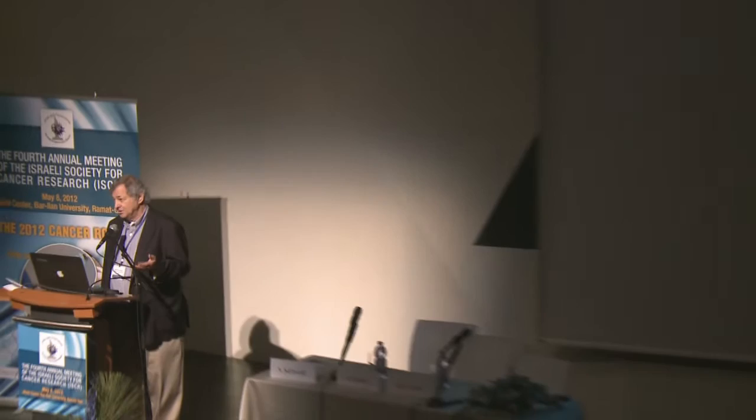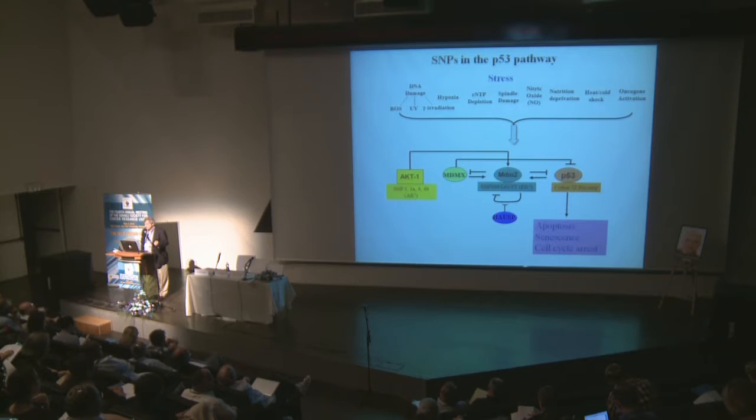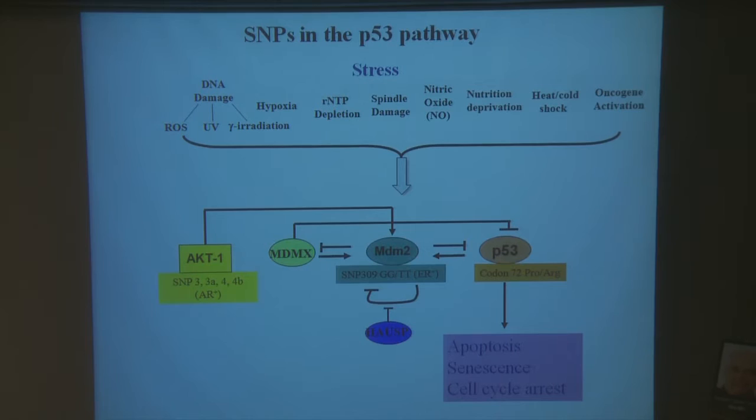There are three kinds of responses. Either there's apoptosis — the cell is killed in response to DNA damage. There's senescence, which is a kind of terminal differentiation of the cell. Or there's cell cycle arrest, which prevents the division process from continuing, allows for repair of DNA damage, and then you can re-enter the cell cycle and continue division.